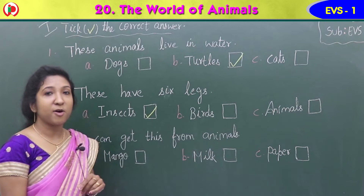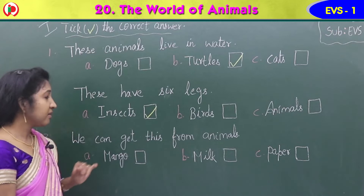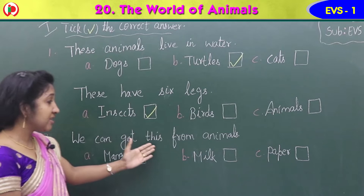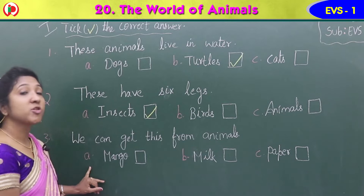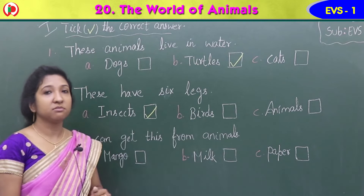You can give a tick here in the square box. Now third question, the last question. Read: we can get this from animals. What do we get from animals? Option A: mango. Option B: milk. Option C: paper.